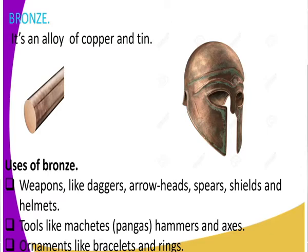Let us start from bronze as a metal. What were some of the uses of bronze, and what is bronze? Bronze is an alloy of copper and tin. When you talk of an alloy, it is a mixture of two metals — one, we have copper, and two, we have tin.